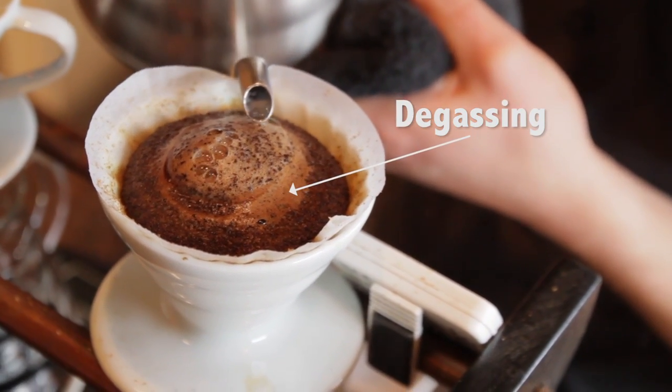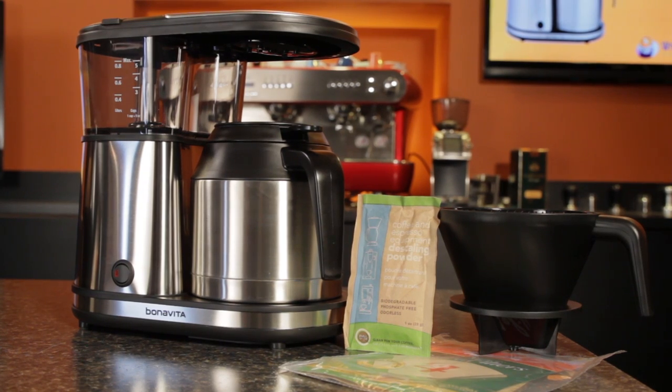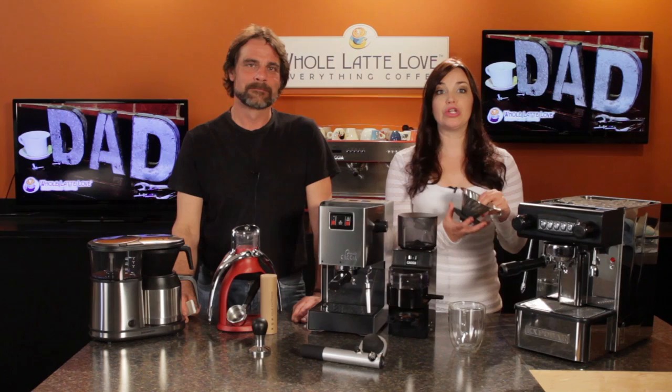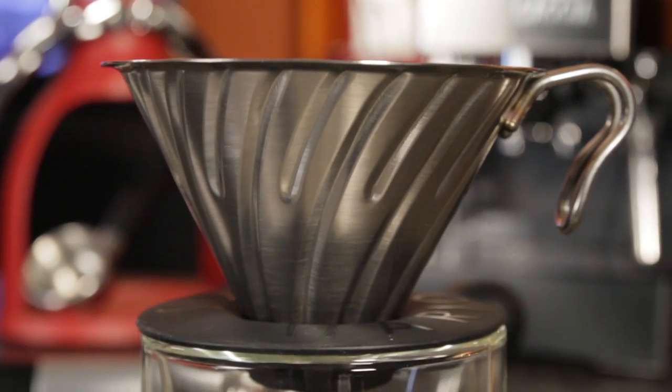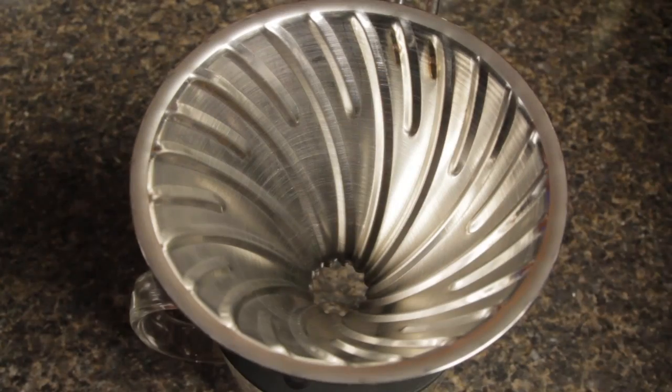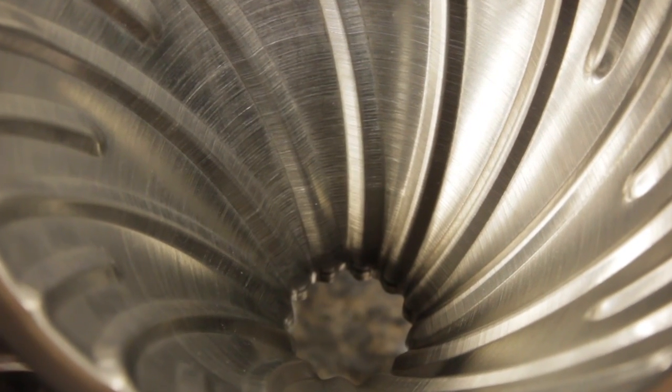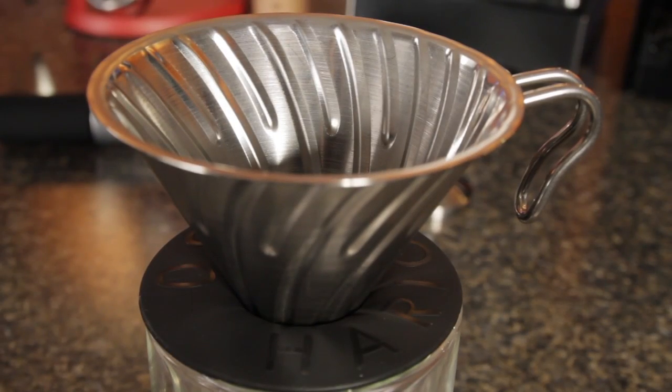If dad's into pour over coffee, the Bonavita is similar in brew quality but without all that work. Speaking of pour over, our next idea is from Hario. It's their new V60-02 metal coffee dripper in silver. With metal construction you get more durability and improved heat retention. The metal dripper has the same curved ridges as Hario's glass models which aid in water flow and interaction with the coffee grounds.